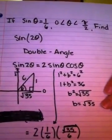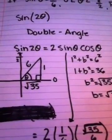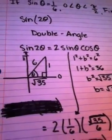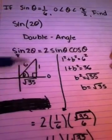Okay, now from looking at this, we know that the sine of a double angle is two times the sine of theta times the cosine of theta.